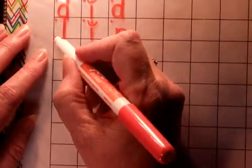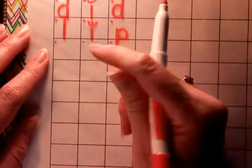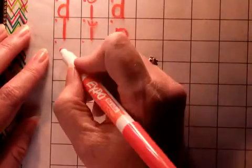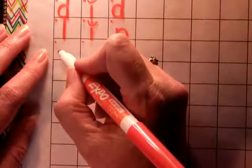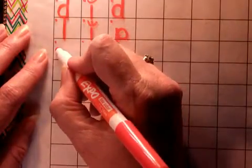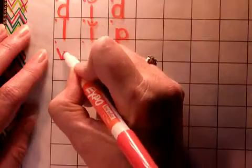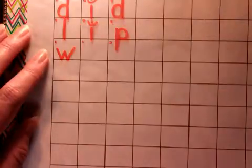W-I-G. The first sound is W. My lips are out like I'm going to kiss my mom. W. That's the W. Down, up, down, up. W.